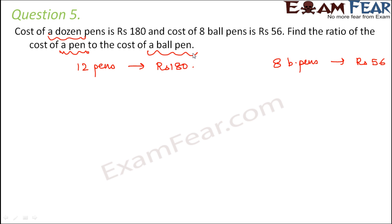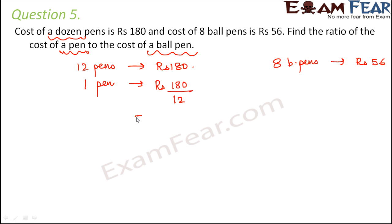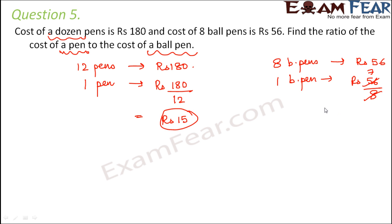To find the ratio, we first need the cost of one pen and one ball pen. For 12 pens costing rupees 180, the cost of 1 pen is 180 ÷ 12 = rupees 15. Similarly, the cost of 1 ball pen is 56 ÷ 8 = rupees 7, since 8 sevens are 56.